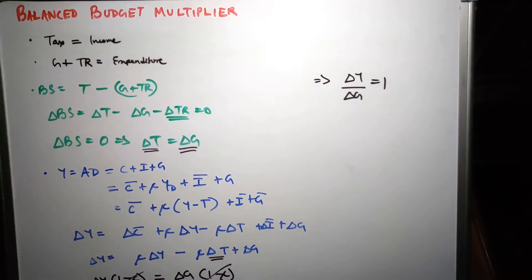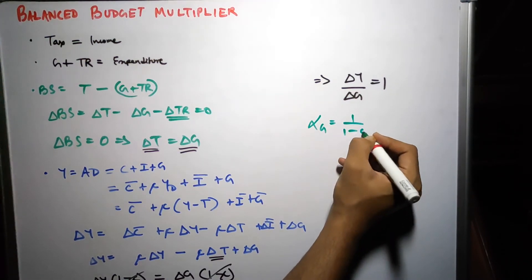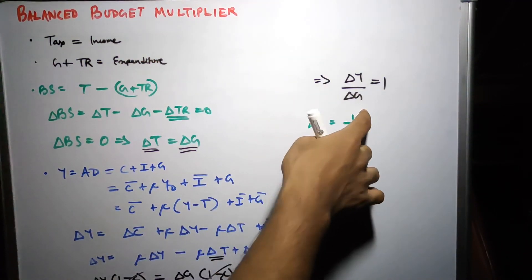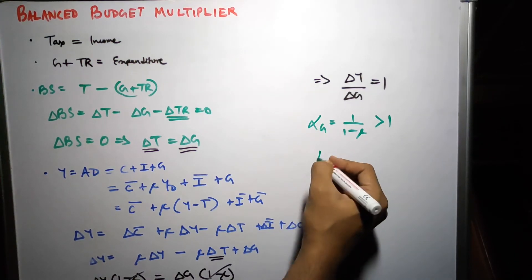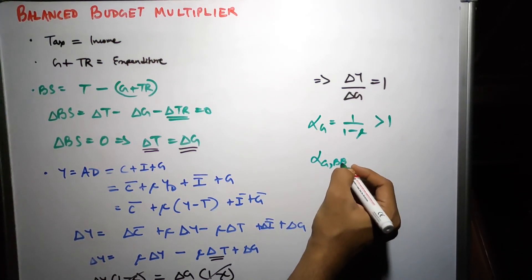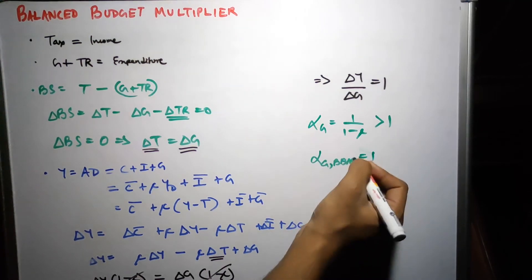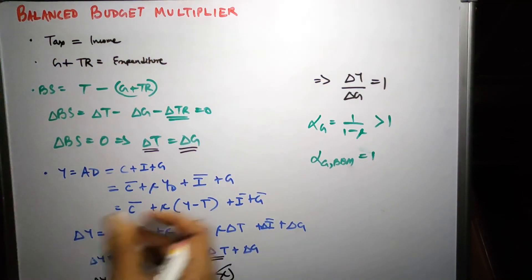If we compare this BBM with the normal government expenditure multiplier in the simple Keynesian model, there is a difference. The standard government expenditure multiplier, denoted as alpha-G, has a value of 1 divided by (1 minus MPC). Since (1 minus MPC) equals MPS, which is a fraction between zero and one, the numerator is greater than the denominator, so this value is greater than one. But the balanced budget multiplier is exactly equal to one — so the balanced budget multiplier's value is less and the standard government expenditure multiplier's value is more. This is the basic difference between the two multipliers.